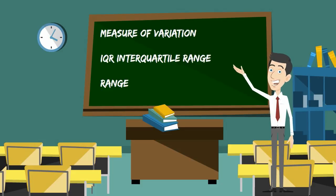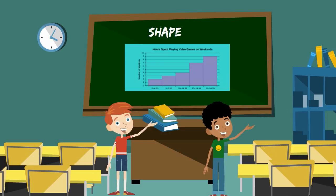Next, your measures of variation include your IQR or your interquartile range and the range, and finally the shape is the last thing we will analyze.